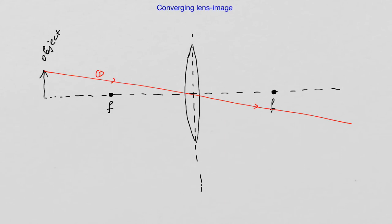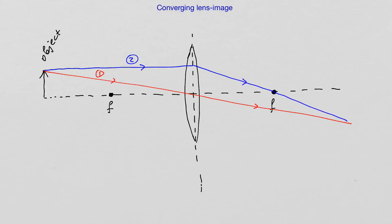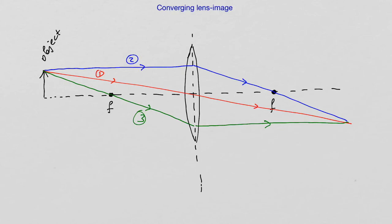Now let's do ray number two, which is incident upon the lens parallel to the optic axis, and is then refracted by the lens to pass through the focal point. Ray number three passes through the other focal point and is then refracted by the lens parallel to the optic axis. The three rays converge at that point, and that is the location of the image of the object. So I can use those three rays for every point of the object to build the complete image. If I place a screen right where the image is, I would see that image.